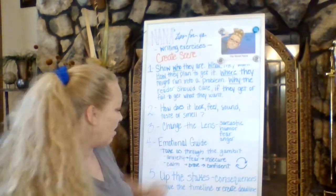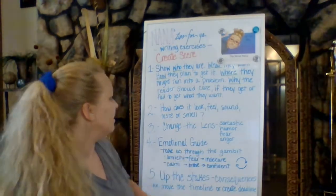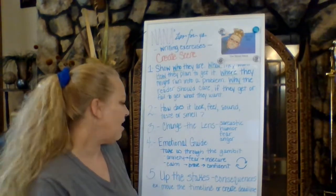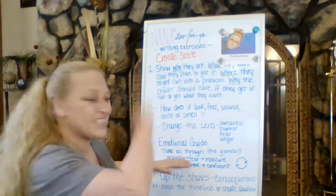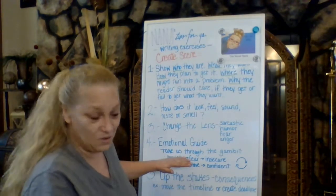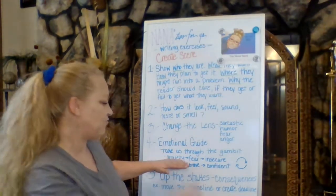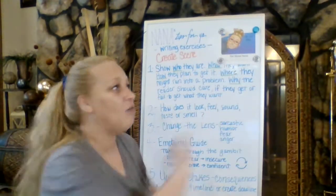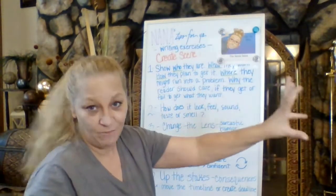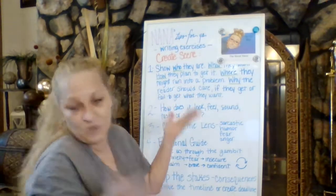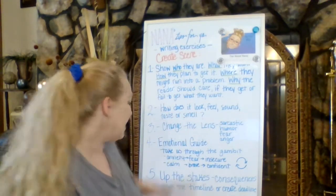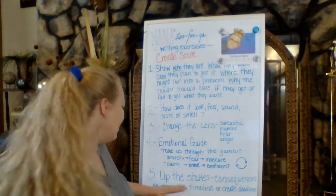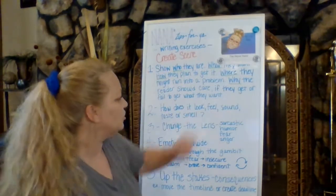Number four: emotional guide. Take us through the gamut of this scene by using emotion — take us through the whole cycle of emotion. Show us from anxiety to fear, their insecurity going to calm, going to brave and then finally confident, or whatever emotions you choose. That's the emotional guide prompt.